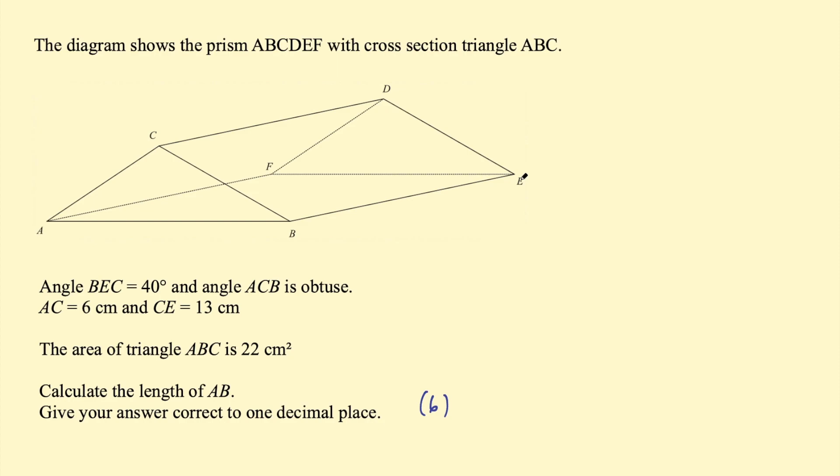Here's a problem from one of the Edexcel practice sets. The diagram shows the prism ABCDEF with cross-section triangle ABC. Angle BEC equals 40 degrees and angle ACB is obtuse. AC equals 6 centimeters and CE equals 13 centimeters. The area of triangle ABC is 22 centimeters squared.